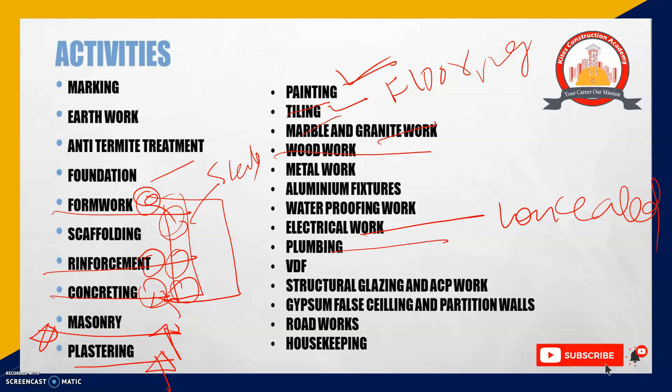Next is woodwork — the fabrication of door frames, window frames, door shutters, and window shutters. Window frames and door frames are provided before the finalization of painting, and the shuttering activity comes after. Then comes metal work — the grill activity — including grills for windows, security grills, railings for staircases, balconies, and utilities. All those works are called metal works.